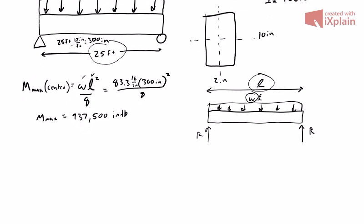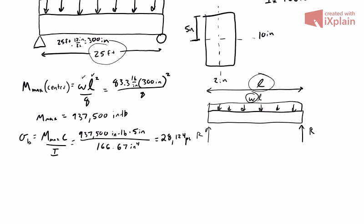Next, we calculate the bending stress. Bending stress is max moment times c over I—no new equation, just the same as the previous lecture. The max moment, 937,500 inch-pounds, times c, the maximum distance to the top from center which is 5 inches, divided by the moment of inertia 166.67 inches to the fourth, gives us a bending stress of 28,124 psi.